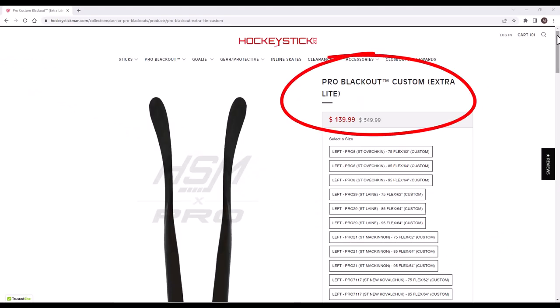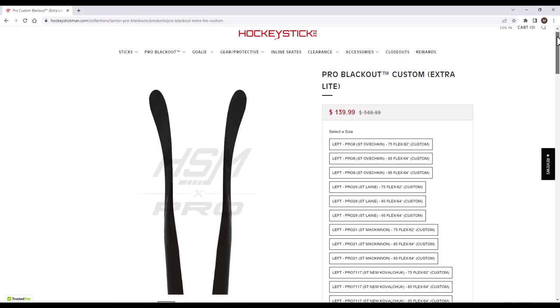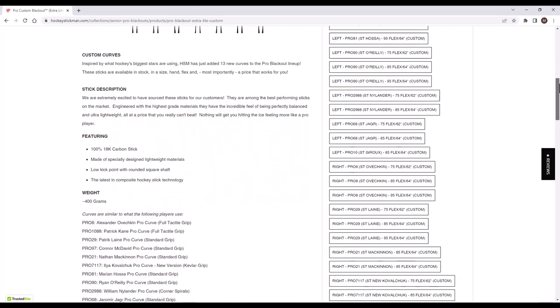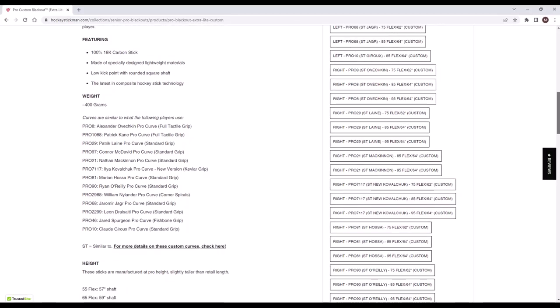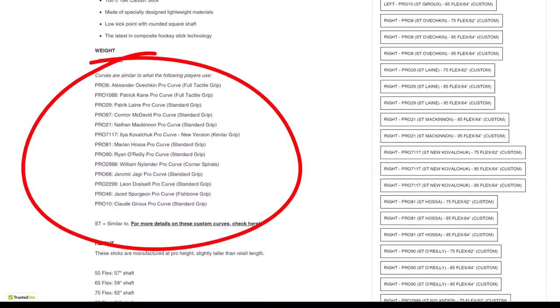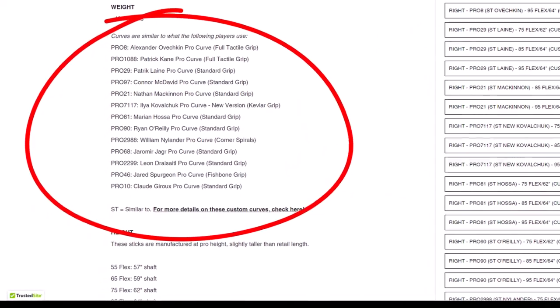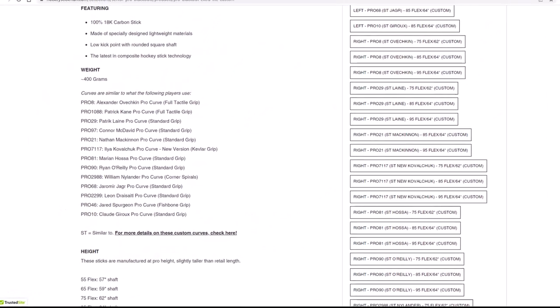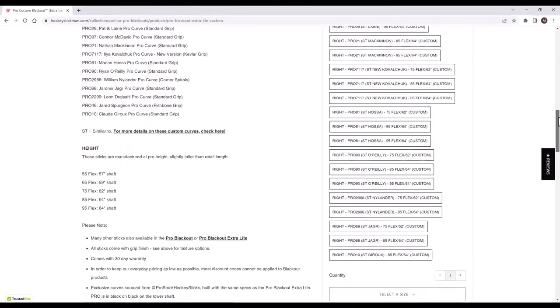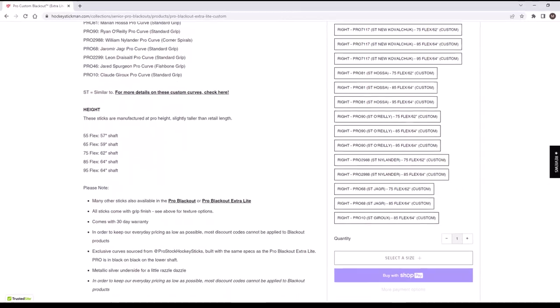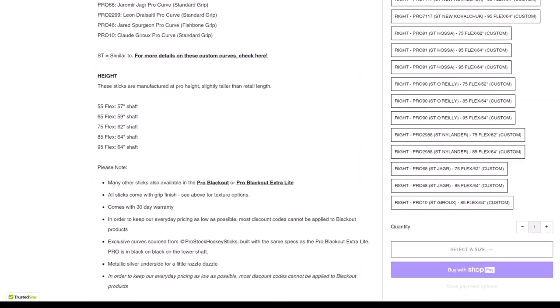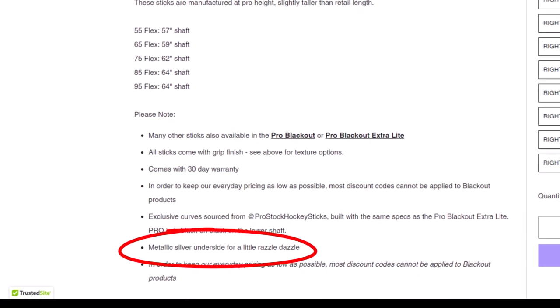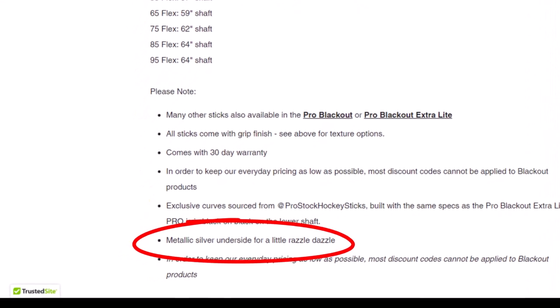Let's take a look at the Pro Blackout Custom Extra Light sticks. So these are nearly identical to the Extra Light sticks spec-wise that I just went through, with the primary difference being the 13 custom curves similar to what pro players use, which is really cool. These come with different grip finish texture options depending on the style ordered. This webpage shows a 30-day warranty, but I did call Hockey Stick Man and was told there's actually no warranty on these. It's the same as the Extra Lights. They also come with a metallic silver underside for a little razzle-dazzle.